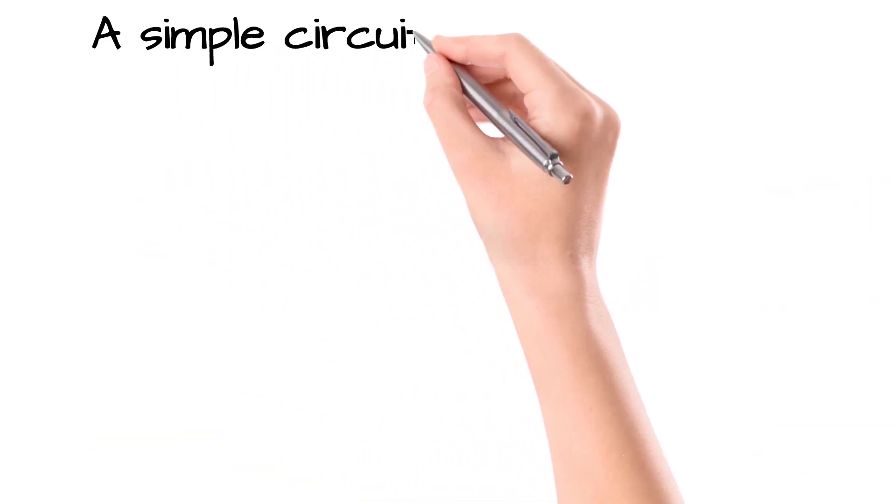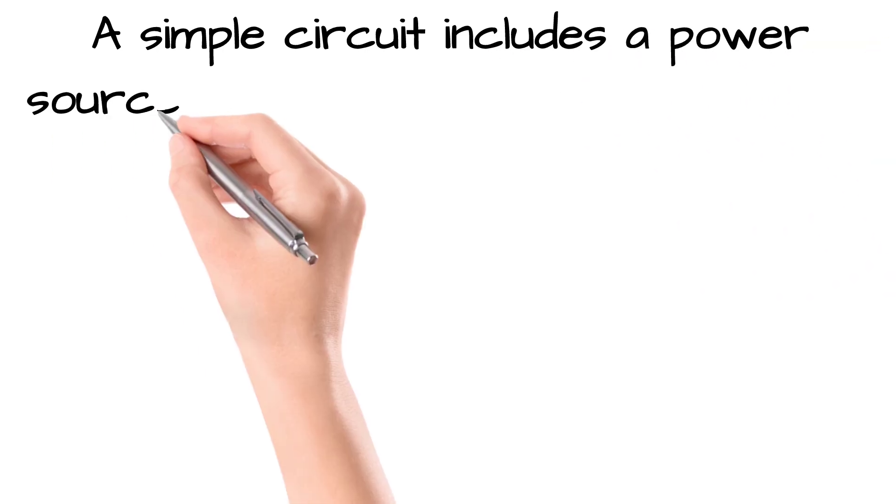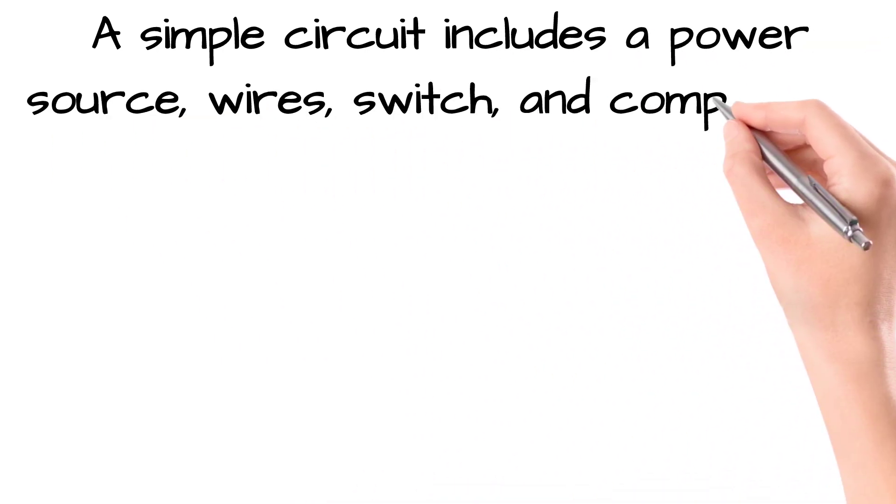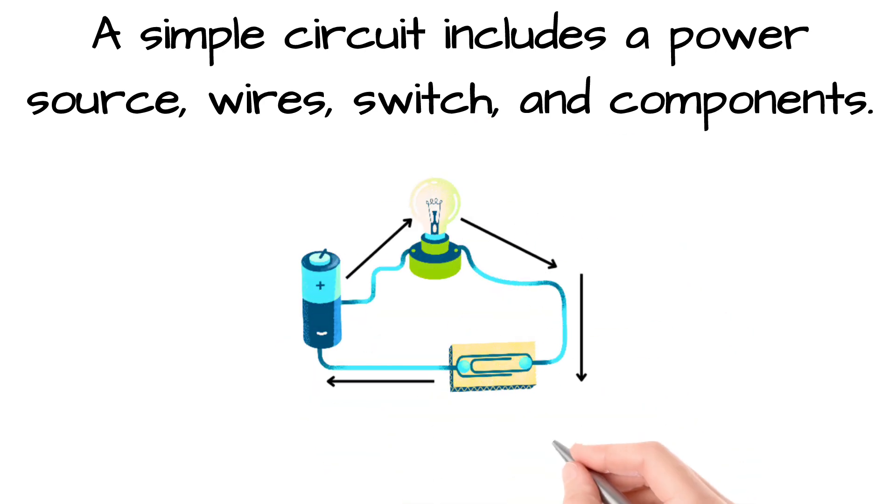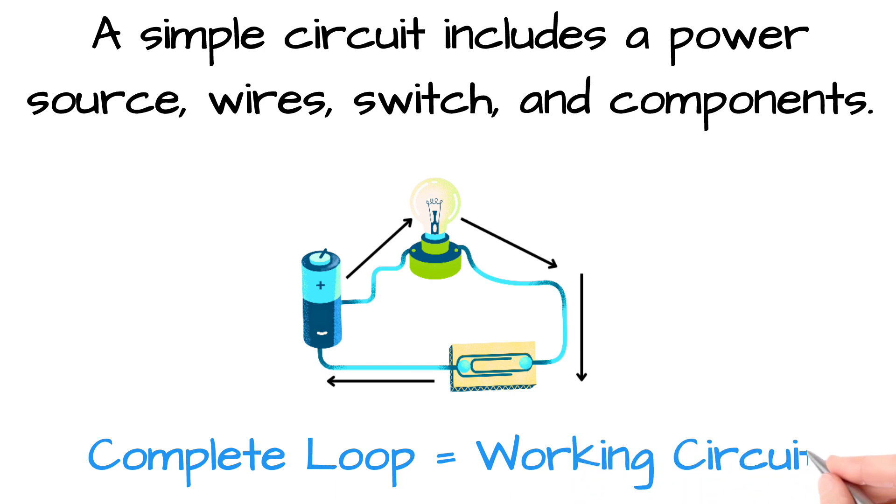When all the parts - the power source, wires, switch, and components - are connected correctly, electricity can flow in a full loop. This complete circuit carries electrical energy from the battery to the component, where it's changed into light, sound, or motion.